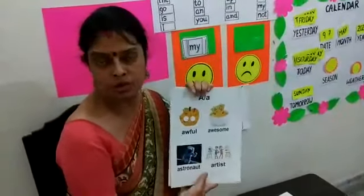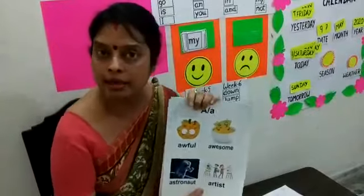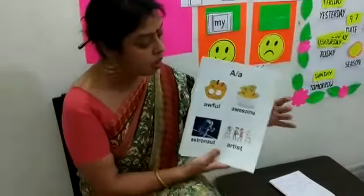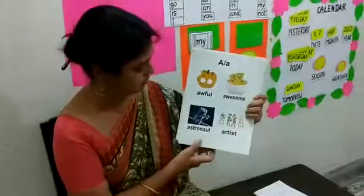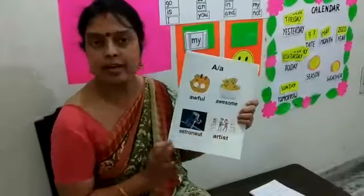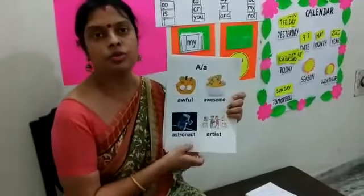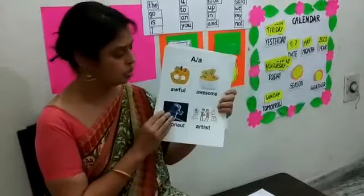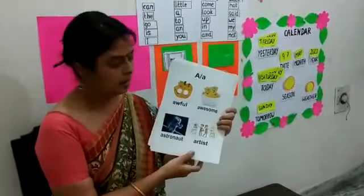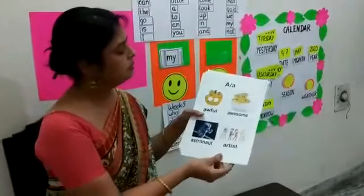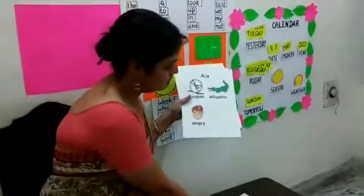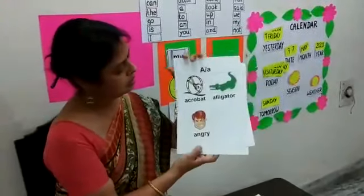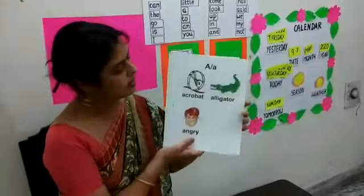Awful — the alligator was awful; awful can be anything, like a painting. Awesome means wonderful, very nice. Astronaut — you can talk about space and astronauts. Artist. Acrobat — you can see an acrobat in the circus.